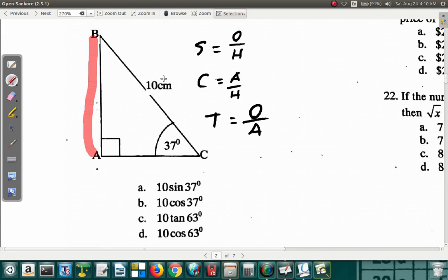Sine is opposite over hypotenuse—we're not using that, so not using sine. Tangent is opposite over hypotenuse—this includes opposite, so we're not using tangent. Cosine is adjacent over hypotenuse. They asked us for the adjacent and they gave us the hypotenuse, so cosine is what we'll be using.